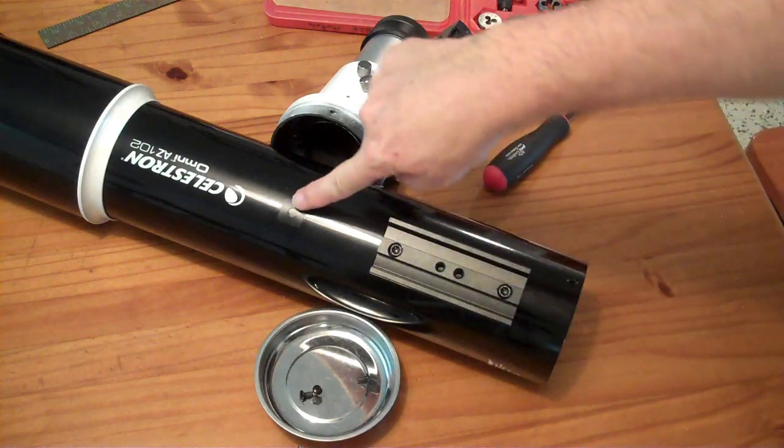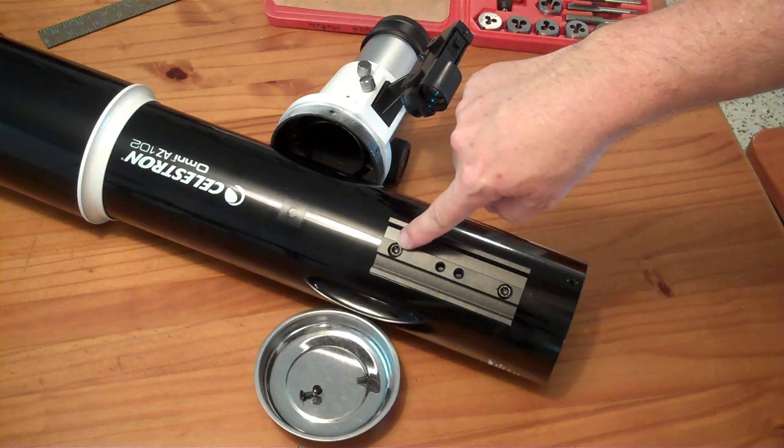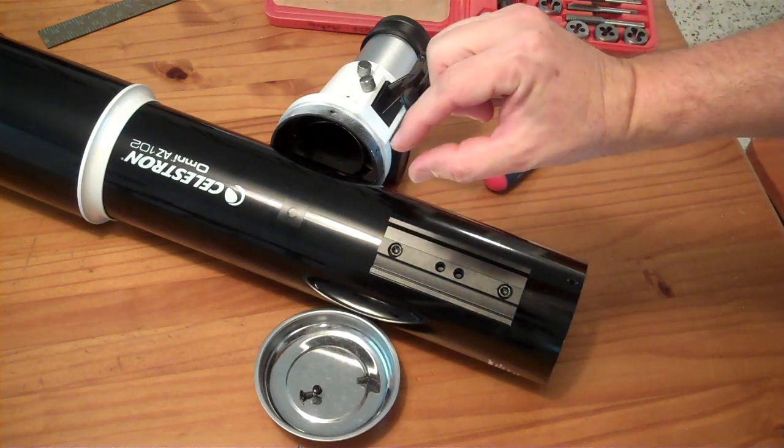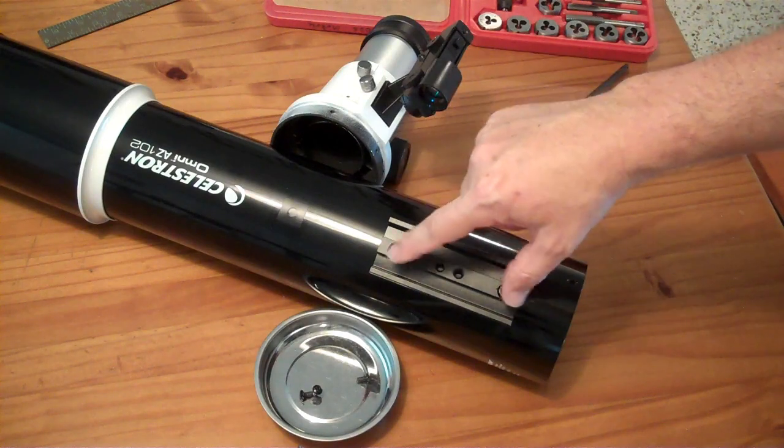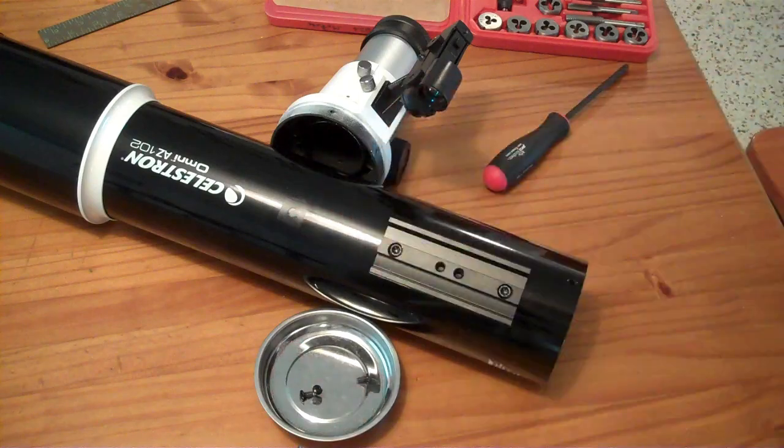And for the exposed screw hole, if you happen to have an easy source for a M6x1 black anodized socket head cap screw that's probably three millimeters tall, you can buy one and then screw it in there. Or I just put a piece of black electrical tape over that guy.